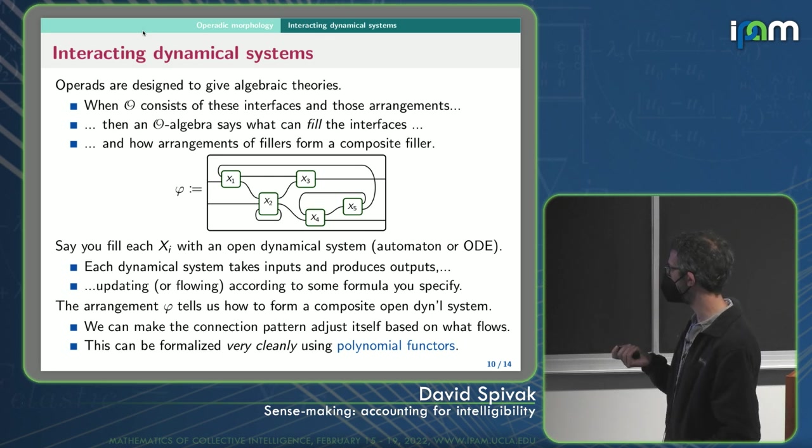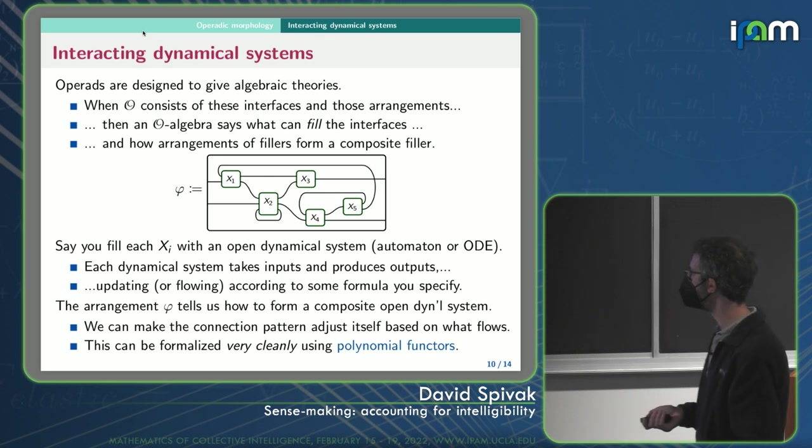So that dynamical system, x dot equals f of x or something, it's really x dot equals f of x comma input variable. And that input variable affects the change. So we specify if we want to give an algebra, so there's an algebra of these dynamical systems. And then if somebody wanted to, they could just put into X1 this dynamical system, and into X2 that dynamical system. And they could see how the whole thing behaved.